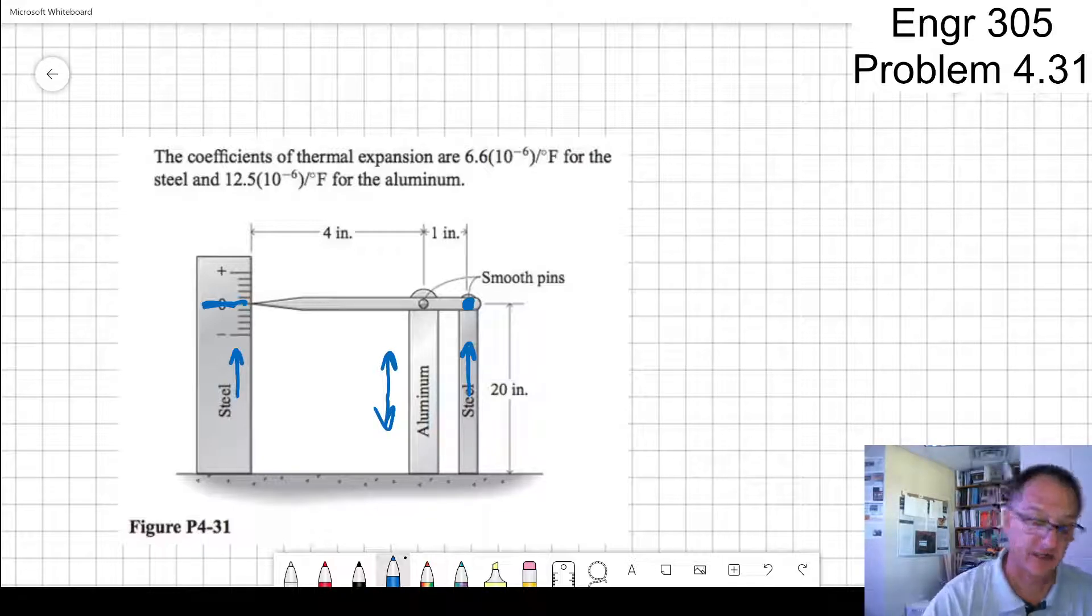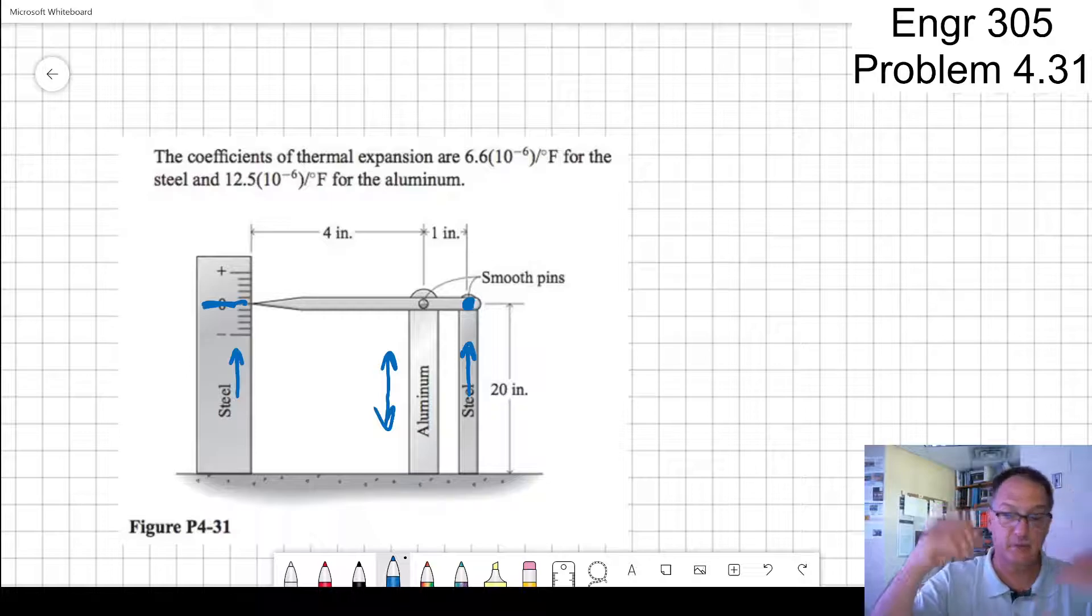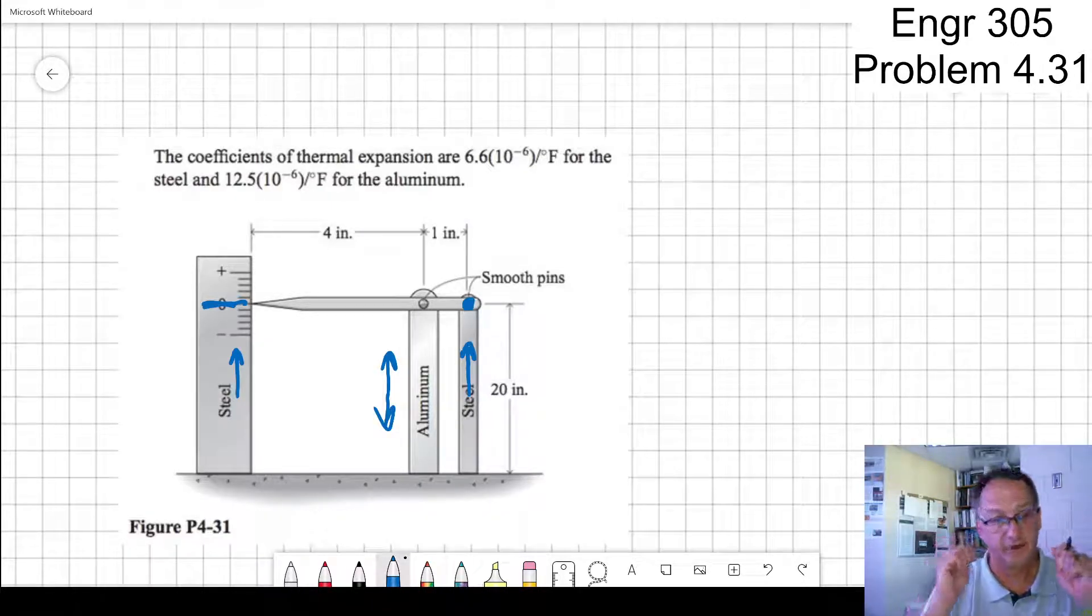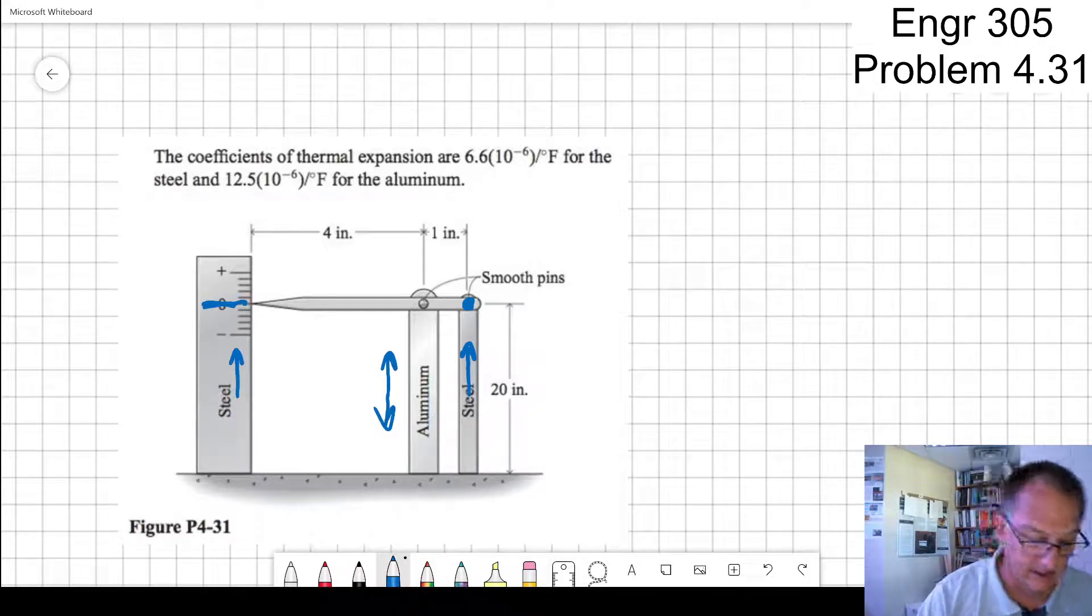Then it's strictly a matter of how much does the aluminum move relative to the steel. It's a relative thing. If the aluminum were rigid and the steel would move, then it would actually go down. If the aluminum grows and the steel doesn't, then it would go up.